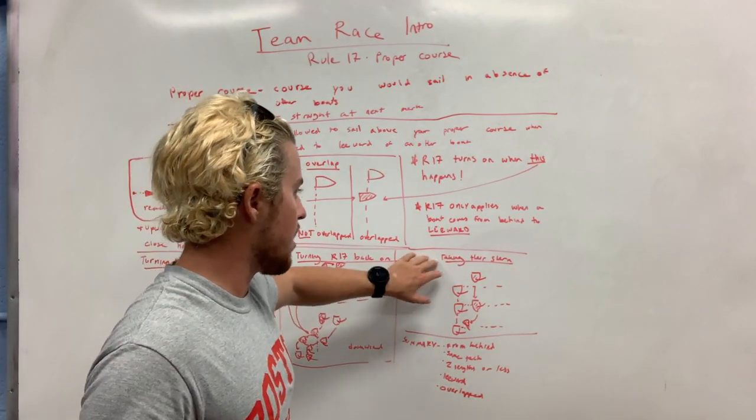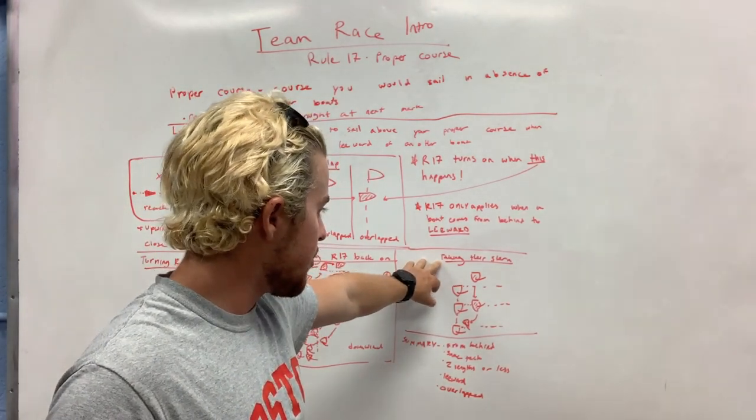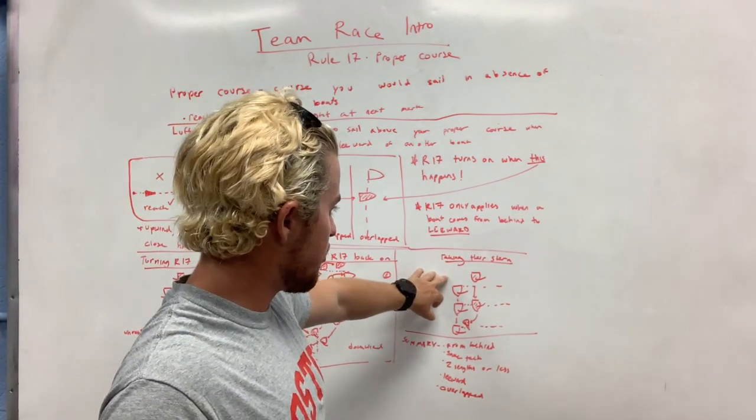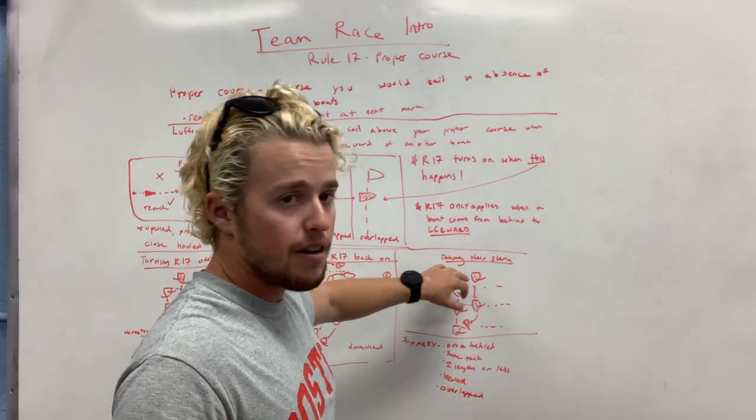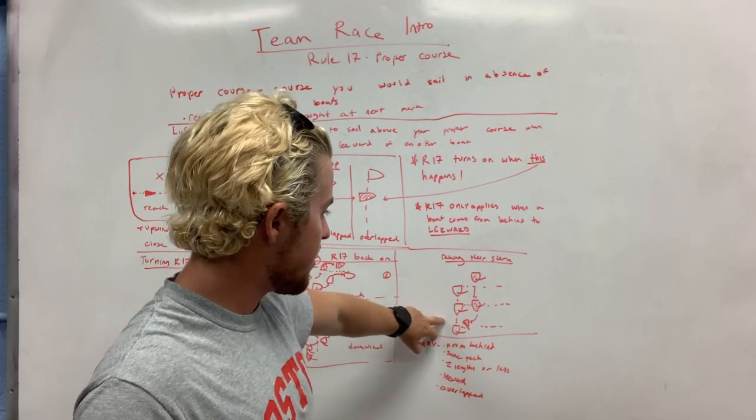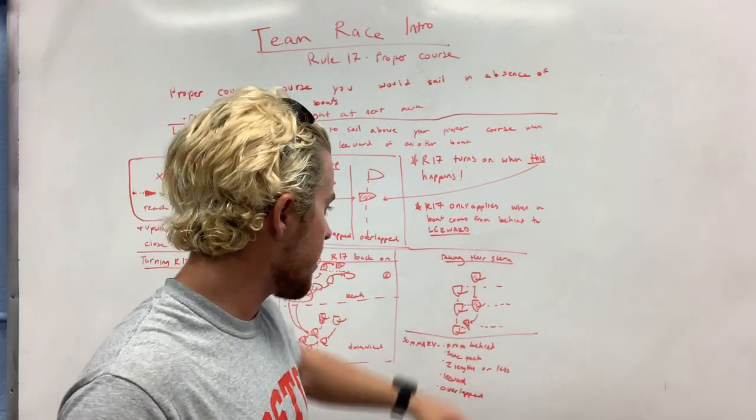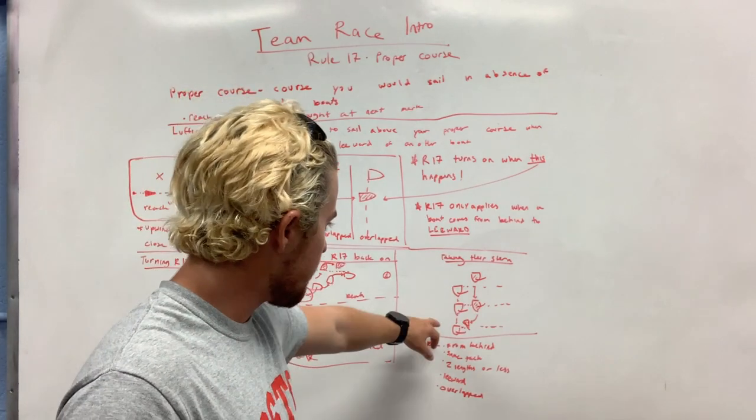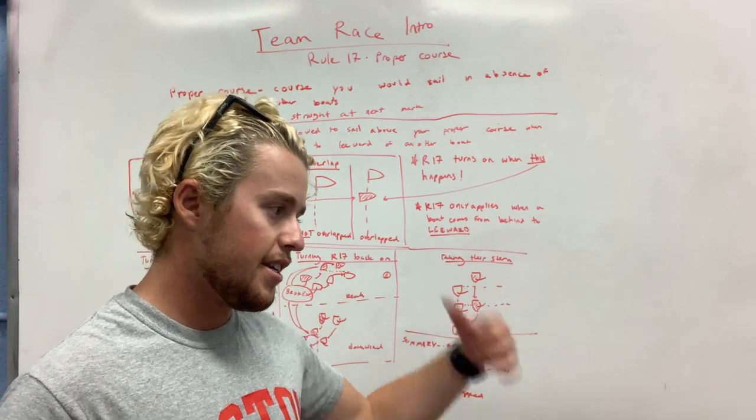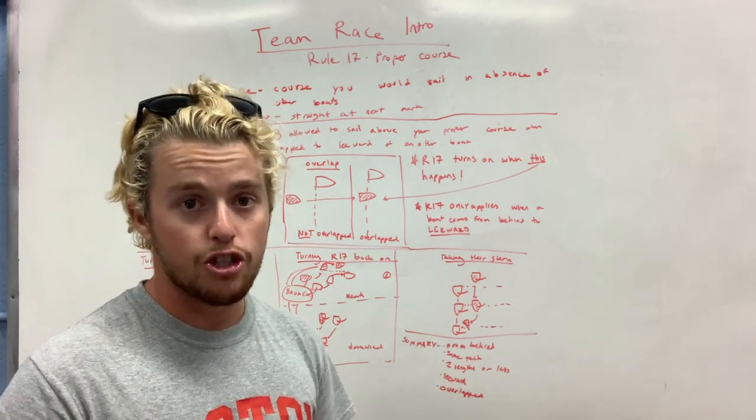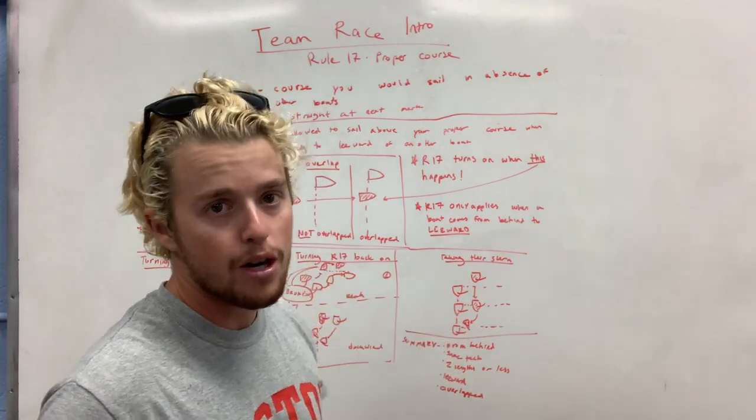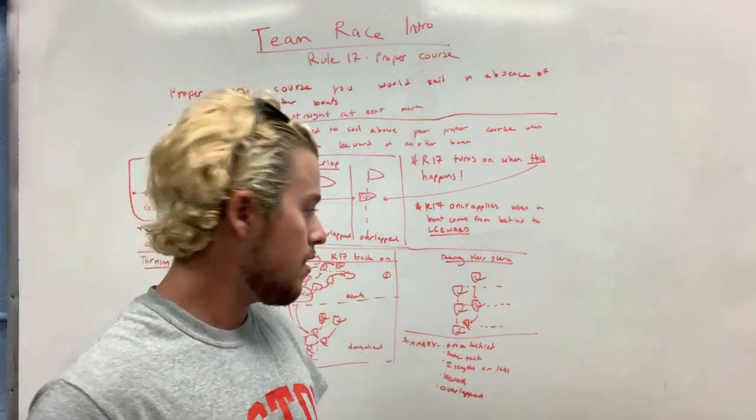Finally, the exception. One of the exceptions in the rule is you can sail above your proper course when it makes you sail behind the other boat. Here we have two boats, red and white, that are not overlapped. Red sails into the overlap from behind. They are restricted. Then red decides, okay, actually I want to go to the other side of them. I'm going to head up very aggressively. They keep clear. And they've sailed above their proper course, but because it is to take their stern, that's totally okay. Taking their stern is different from luffing them. If we were here and we started to head the other boat up, make them avoid us, that's a foul.